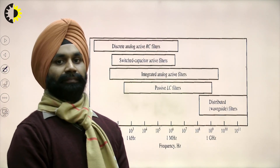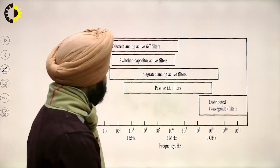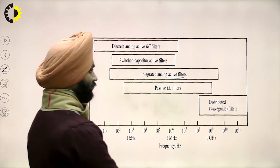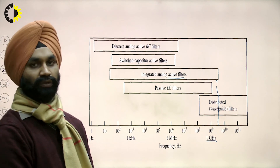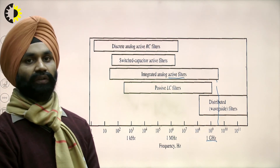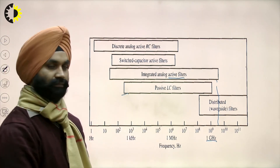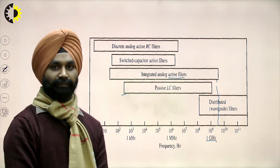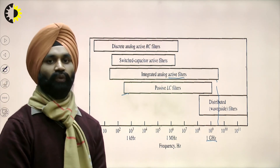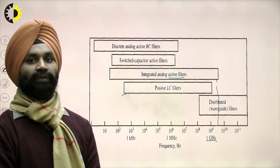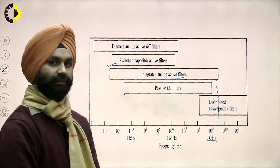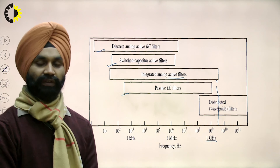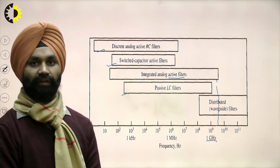Active analog filters can be used over a wide frequency range. Up to around one gigahertz we can use active IC analog filters as well as passive filters. For lower frequencies, we can use switched-capacitor active filters, and for even lower frequencies, discrete analog active RC filters. So for different frequency ranges, active filters are available across a large spectrum.